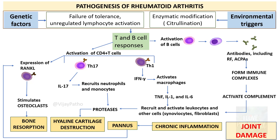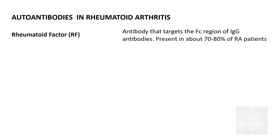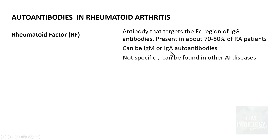That concludes the pathogenesis of rheumatoid arthritis. Now let's understand the types of autoantibodies produced. The first is rheumatoid factor — antibodies that target the Fc portion of IgG antibodies. They can be IgM or IgA autoantibodies and are present in around 70 to 80 percent of RA patients. However, rheumatoid factor is not specific, as it can be found in other autoimmune diseases as well.